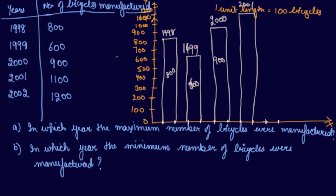In 2002, 1200 bicycles are produced. Take a straight line. In 2002, 1200 bicycles are produced. And in 2001, 1100 bicycles are produced.